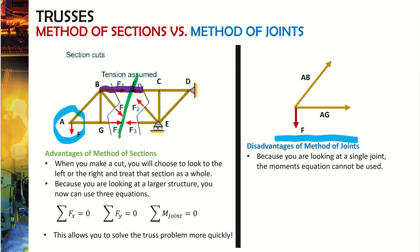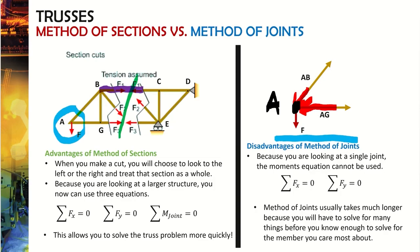The disadvantage of method of joints is that because you're looking at a single joint, every force goes through the same point, so the sum of moments equals zero — leaving only two equations: sum of forces in X and sum of forces in Y. You essentially have to work step by step through the entire truss, solving for members AG and AB before moving on to joint B, then possibly joint G, continuing up. Method of sections is always going to be much faster.